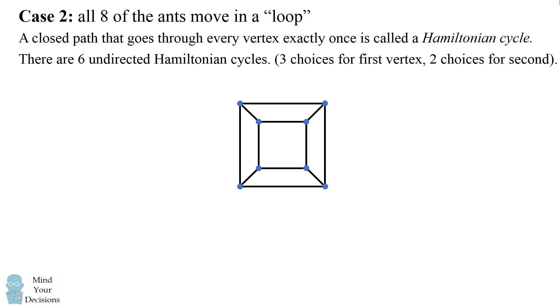So let's illustrate the number of Hamiltonian cycles. Let me clean up this diagram. And now I'm going to tell you there are actually six undirected Hamiltonian cycles. You can imagine if you start at one vertex there will be three choices, and then for the second vertex that you go to there will be two more choices. So here's one example of a Hamiltonian cycle.